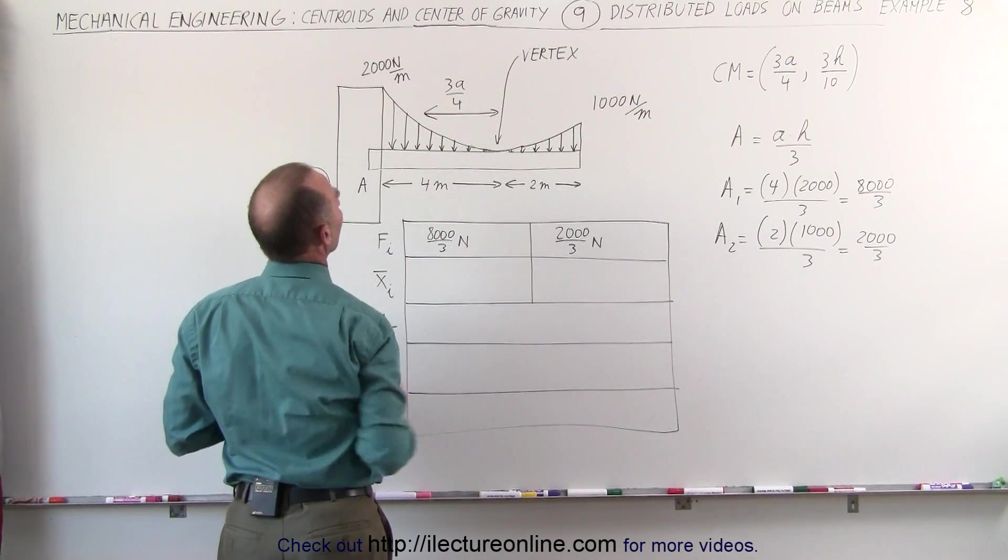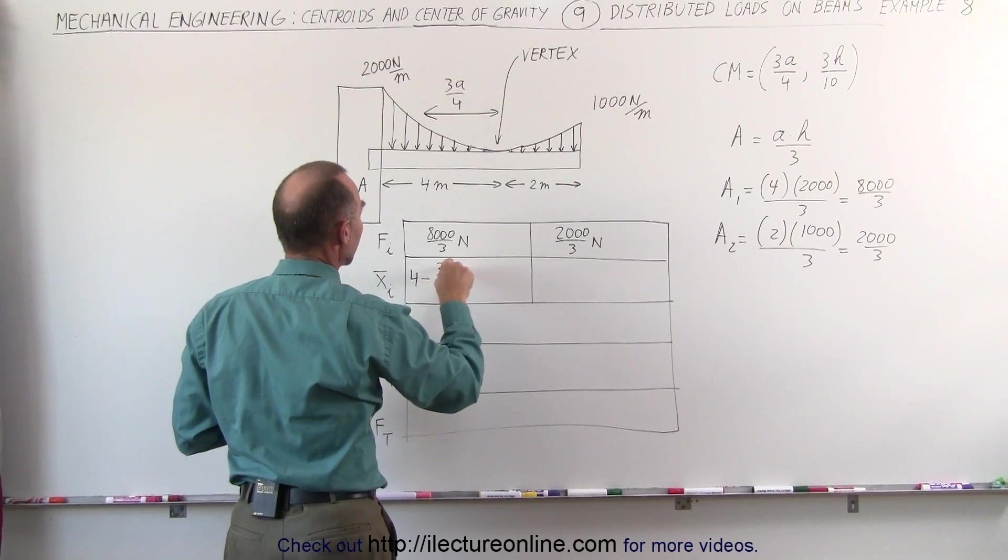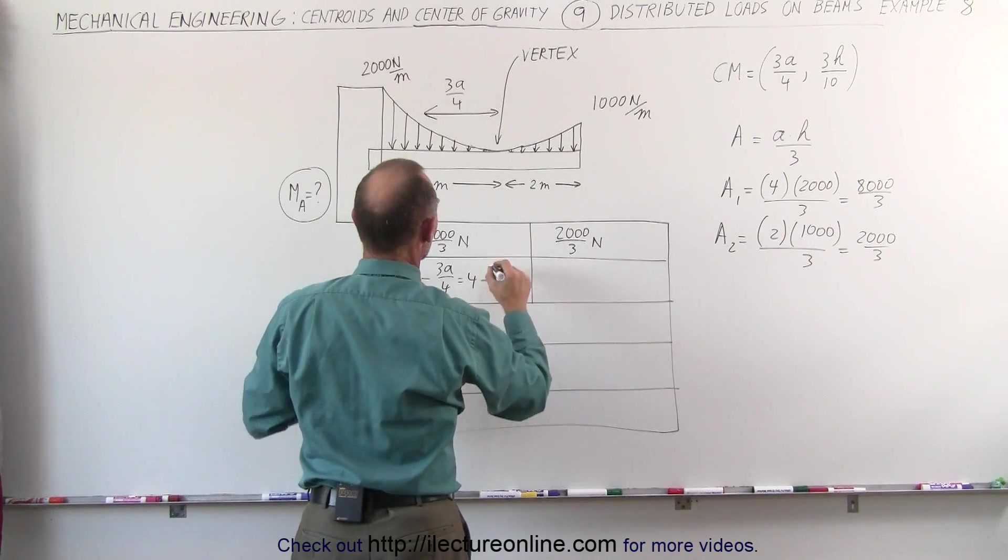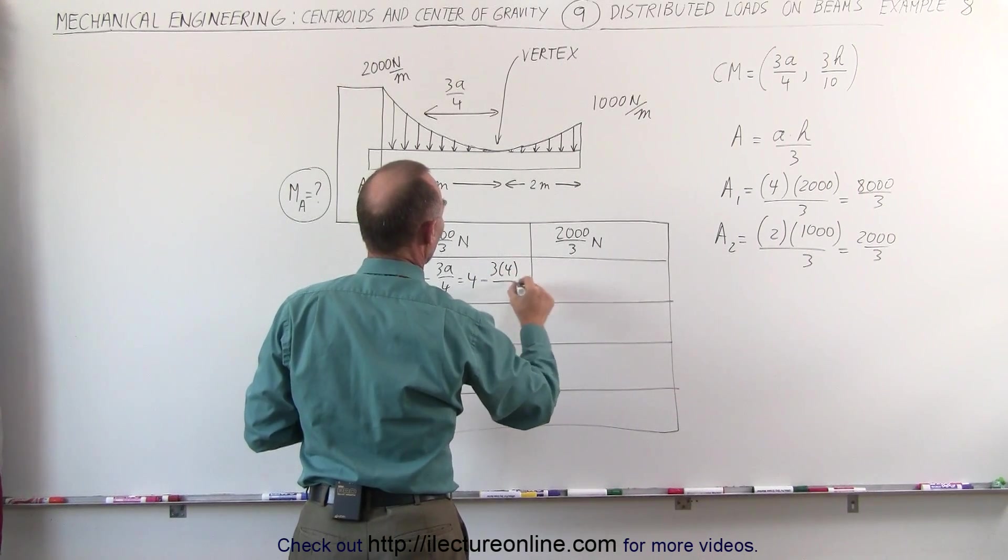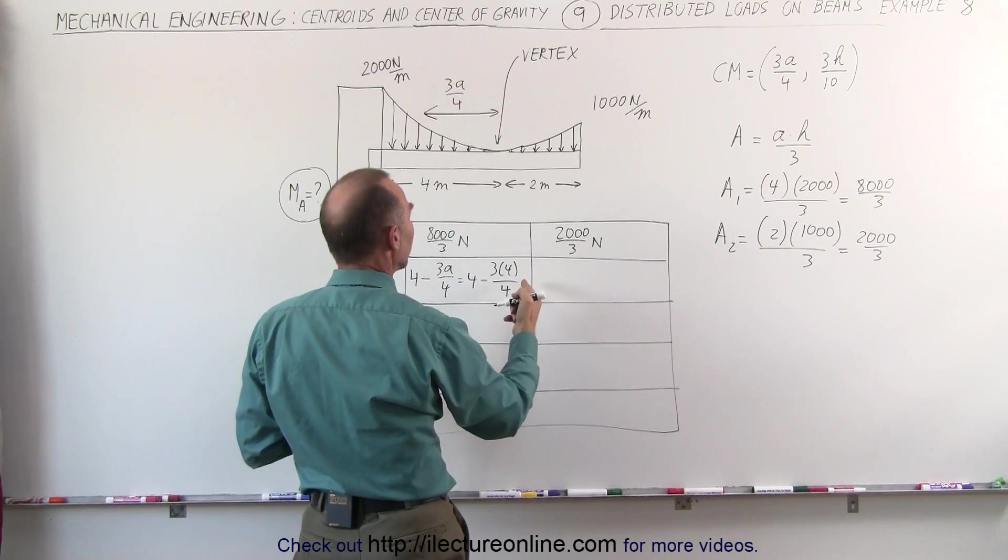4 minus 3A divided by 4, which is 4 minus 3 times A, which is 4 divided by 4. 3 times 4 divided by 4, which is 1.